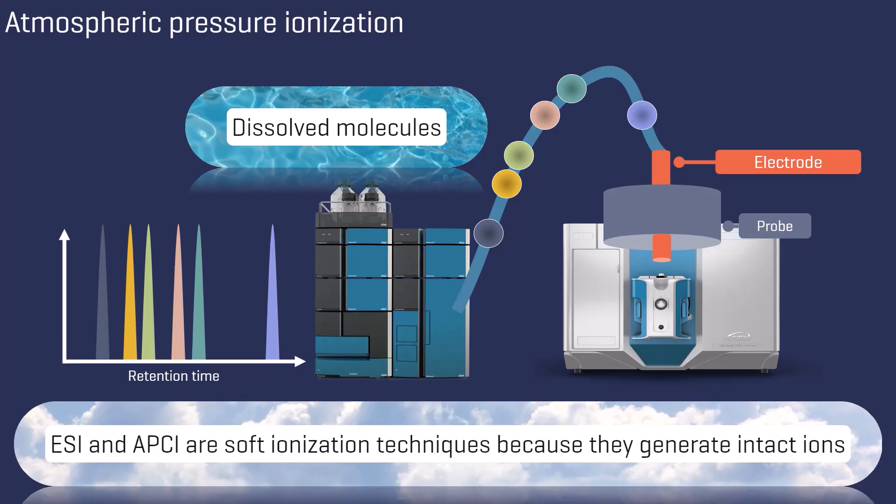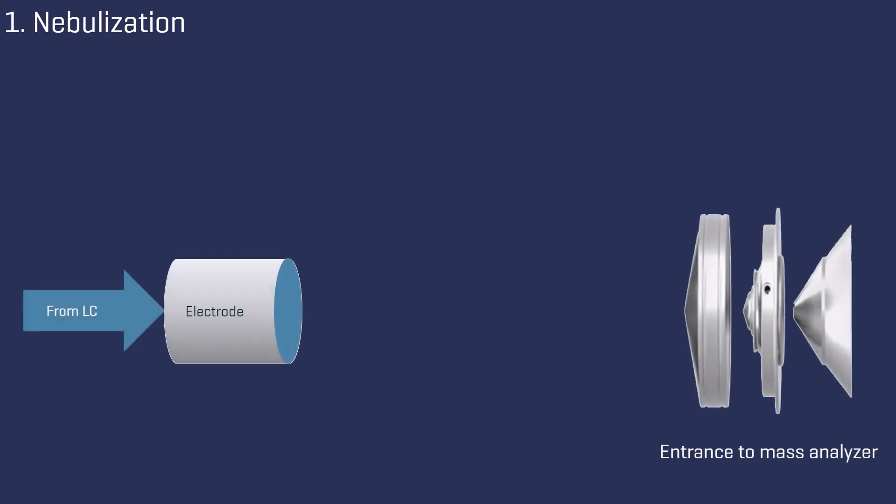In this episode, we will have a look into the different steps of the electrospray process with more detail. We will begin by exploring what happens when the liquid from the LC flow exits the electrode and enters the inside of the ion source.